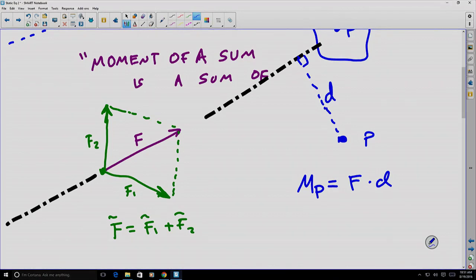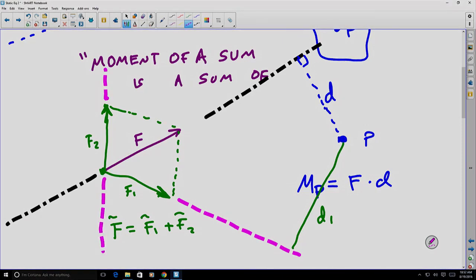Where D is the moment arm around the point P compared to the line of action of F. Well, I can similarly take the line of action of F1, in which case it would have its own distance, its own moment arm. Let's call that D1. And F2 has its own line of action. And we can measure the distance to F2. We'll call that D2. So each of those components has its own moment arm.